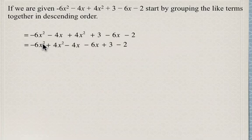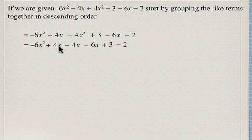So the first are the ones with the exponent 2, then 1, then our constants. And remember, we can add or subtract like terms which have the same variable and the same exponent. So we can add or subtract the first two, then we can add or subtract minus 4x minus 6x, and we can add or subtract the 3 minus 2.